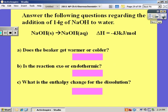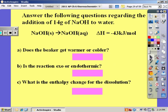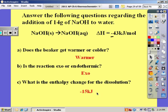You're going to pause the video and try this one on your own. I'm going to answer part B first, and that's going to be exo because my delta H is negative. If it's exothermic, it's releasing energy, which means the beaker should get warmer. And to calculate the enthalpy change, I'm going to have to set up my stoichiometry. You should have got negative 15 kilojoules.